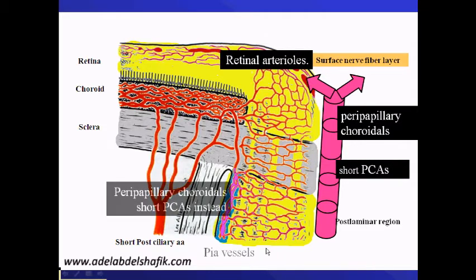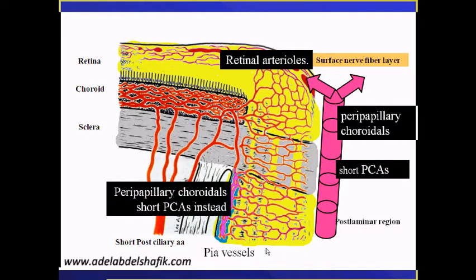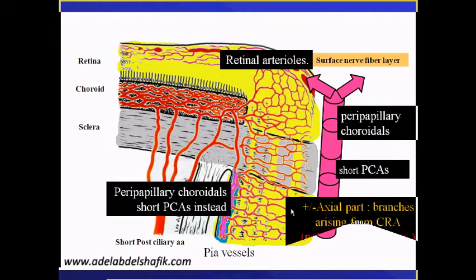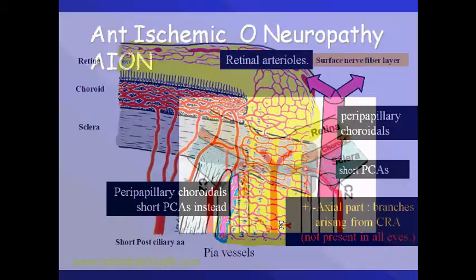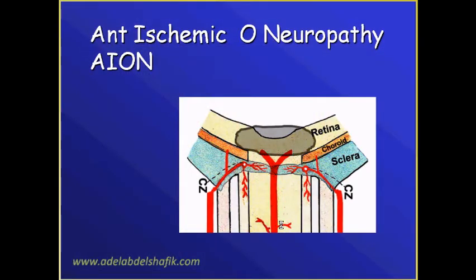And the post-laminar parts of the optic nerve. But sometimes you get some branches coming from the central retinal artery supplying a part of the post-laminar area — this is not present in all eyes. In anterior ischemic optic neuropathy...